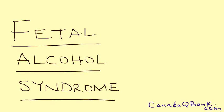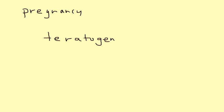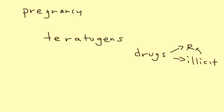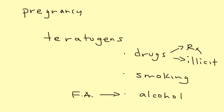Fetal Alcohol Syndrome, or FAS, is the topic. Essentially, we're talking about a situation that can occur during pregnancy. During pregnancy, you are not supposed to take things known as teratogens, which include drugs — either prescription or illicit street drugs — smoking, and alcohol. Alcohol is what causes fetal alcohol syndrome.